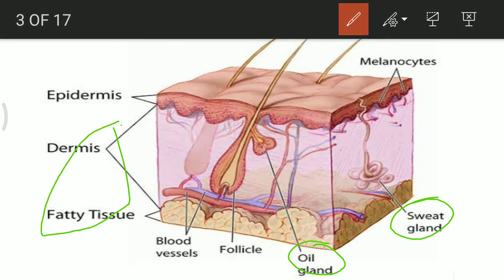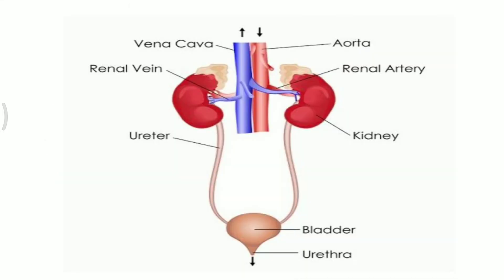The liver is the site where decomposition of hemoglobin takes place. Dead red blood cells are broken down to form bilirubin and biliverdin — the bile pigments. The color of feces is due to the presence of these bile pigments. Various drugs, cholesterol, and vitamins are also stored in the liver, and bilirubin along with urea end products are released from the body through the excretory system.